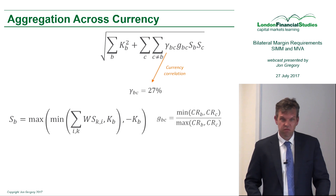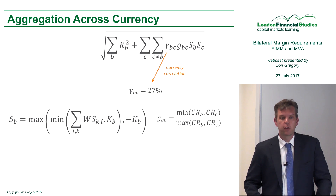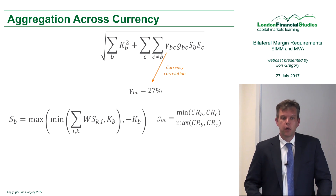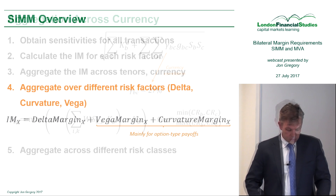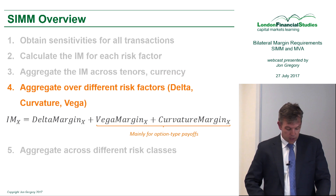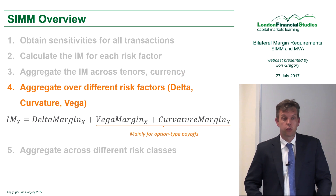Essentially it's relatively easy to explain. Across currencies, you assume that there is a correlation. Finally, in step five, I aggregate across the different risk classes.